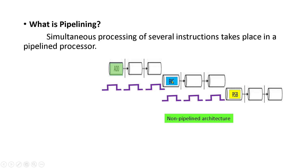For executing the BIC bit-clear instruction, it again goes through fetch, decode, and execute phases, each taking one clock cycle, totaling three clock cycles. So for executing three instructions, it takes three clock cycles each — a total of nine clock cycles in a non-pipelined architecture. A processor using non-pipelined architecture takes nine clock cycles to execute three simple instructions.